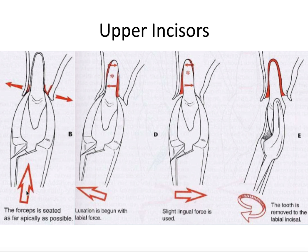After the periosteal and dental elevators, seat the forceps as apically as possible around the tooth since we freed up the soft tissue attachments. For upper anterior teeth we would luxate the tooth labially and then lingually until it's mobile enough to remove — labial with some resistance, hold for a few seconds, then push lingually, hold for a few seconds, slow and deliberate. Always apply apical pressure to seat the forceps as apically as possible. Rotary motion can be used for these conical roots to help break the more apically located PDL fibers, then the tooth can be removed once sufficiently mobile.